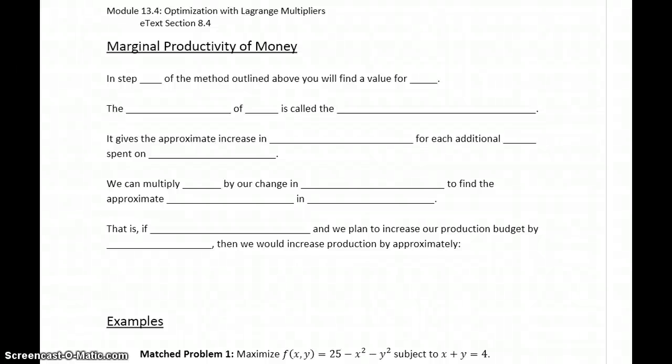One of the applications that we can talk about in this module is called the marginal productivity of money. In step three of the process that we just outlined, what we're going to do is find a value for lambda.